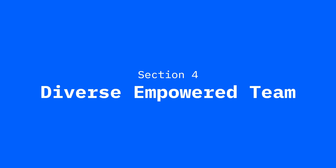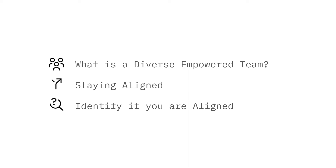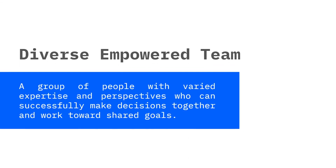In section 4 of this video, we will be looking into the third and final principle of enterprise design thinking. We will look into what diverse empowered teams are, how to stay aligned, and how to identify if you are aligned. The more diversity you can tap into when solving a problem, the more likely you are to find a breakthrough solution. All the practices involved in design thinking — such as design research, user observation, brainstorming and ideating — are amplified when working with diverse teams that bring varied skills, perspectives and backgrounds to the project. A group of people with varied expertise and perspectives can successfully make decisions together and work towards shared goals. Diverse teams build upon each other's ideas, enrich each other's knowledge, and challenge each other's assumptions in ways that accelerate the work.